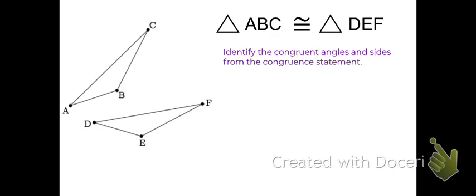Now, congruent angles are corresponding to one another. That means that they are in the same spot when labeling that triangle. So A and D are both the first letters when labeling these two congruent triangles.